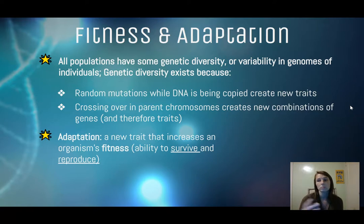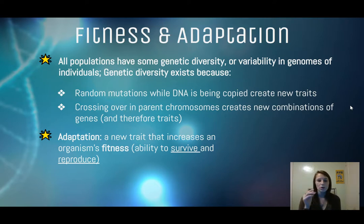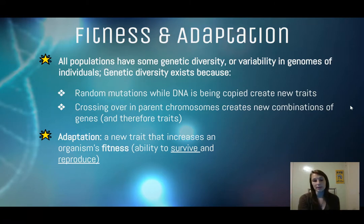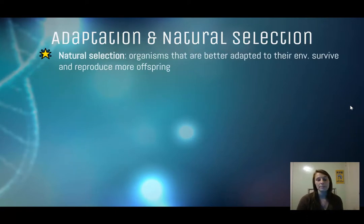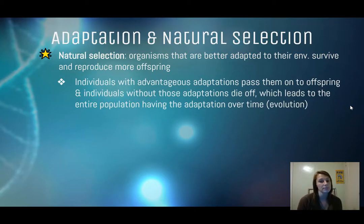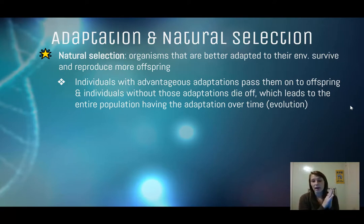This all leads to adaptations. An adaptation is a new trait that increases an organism's fitness. When we talk about fitness, we aren't talking about exercise — it's the ability of an organism to survive and to reproduce. So if a trait increases that ability, it is increasing the organism's fitness. The way adaptation leads to natural selection is that organisms better adapted to their environment are going to survive and reproduce more offspring. Individuals with advantageous adaptations pass these traits on, while individuals without those adaptations die off, so over time the entire population will have the advantageous trait.